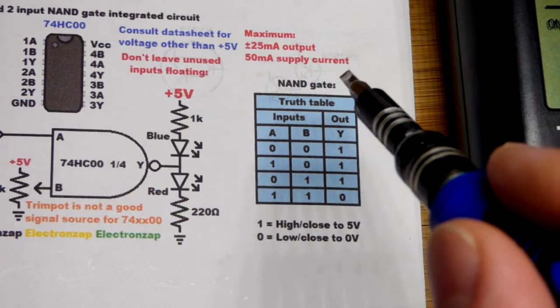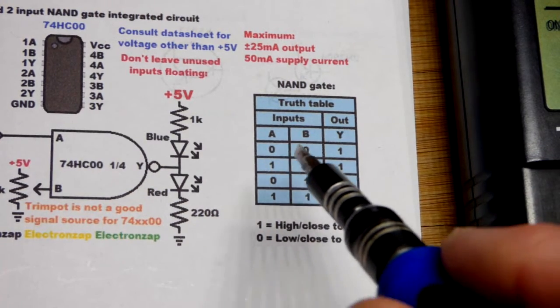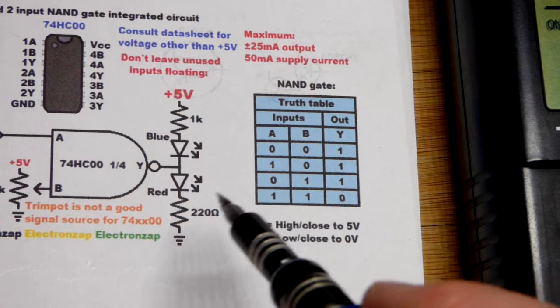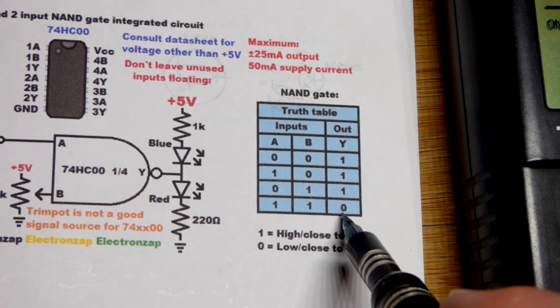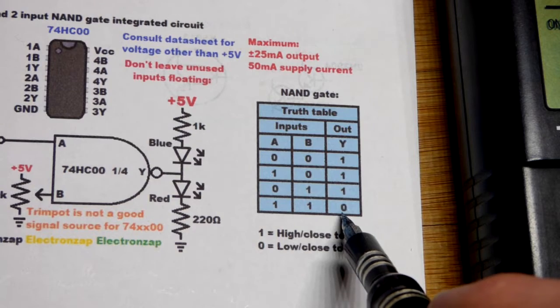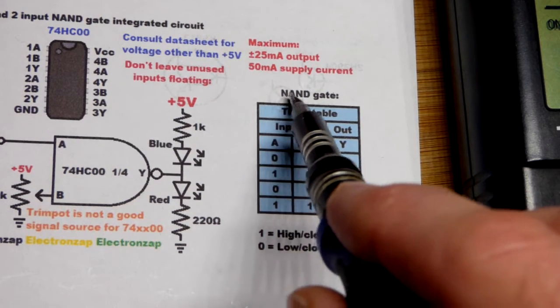The NAND gate truth table looks like this: if any inputs are low, then the output is high. You need all of the inputs to be high for the output to be low. That is the opposite of the AND gate. It's basically a NOT AND gate.